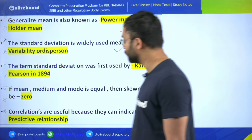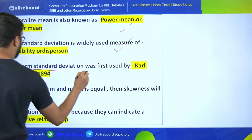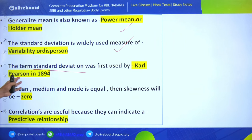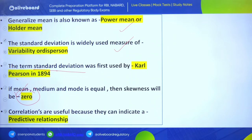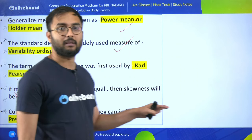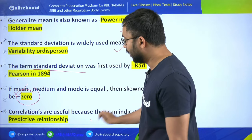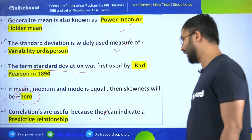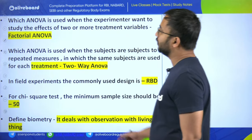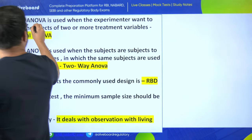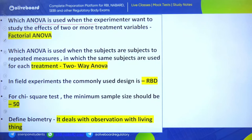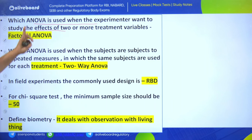Generalized mean is also known as power mean or Hölder mean. Standard deviation is widely used to measure variability or dispersion. The term standard deviation was first used by Karl Pearson. If mean, median, and mode are equal, skewness is zero. ANOVA is used when the experimenter wants to study the effect of two or more treatment variables - that is factorial ANOVA.